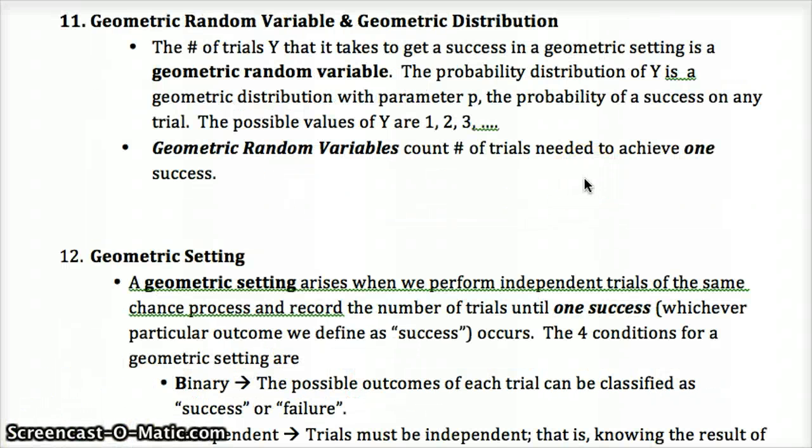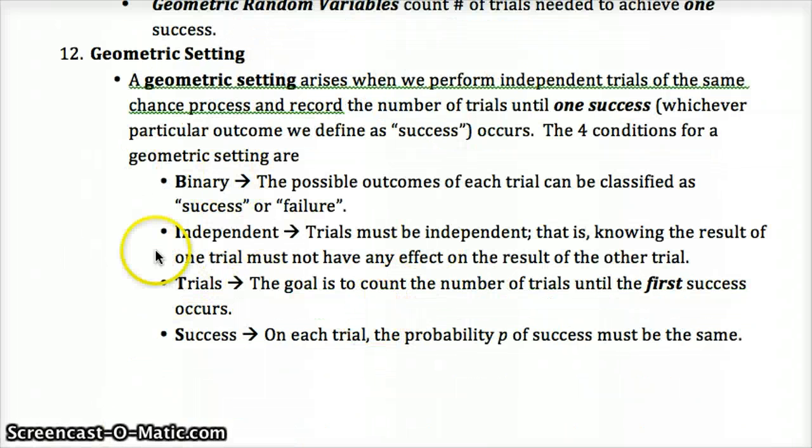Whereas the binomial was the number of successes in a fixed number of trials, geometric random variable is when we want to count the number of trials until we get one success. So that's the main difference. We're counting the number of trials to get one success. Otherwise, they're very similar. We're counting the number of trials for one success. So how many shots does somebody have to take to make one free throw? For that reason, the requirements are very similar. We still have binary. Every trial has to be either a success or failure. The trials also must be independent. But instead of having a fixed number of trials, we're just counting the number of trials to the first success. This is the only difference.